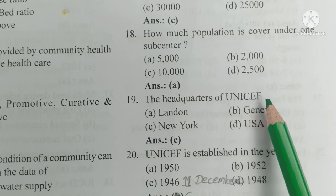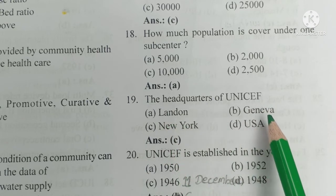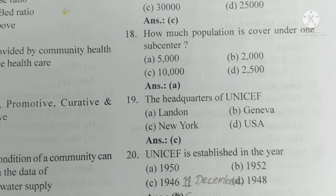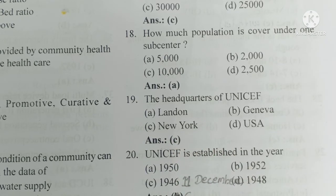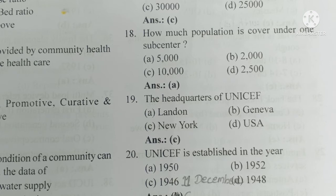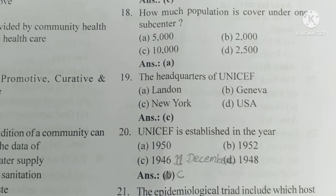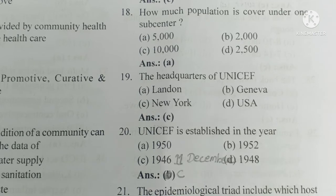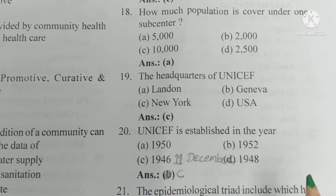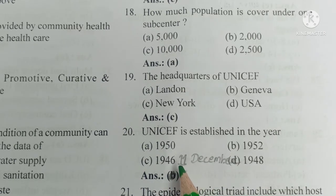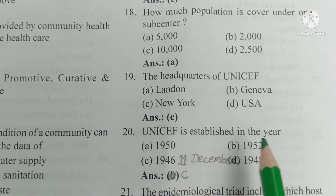Question number 19. The headquarters of UNICEF is: A) London, B) Geneva, C) New York, D) USA. The answer is C, New York. Question 20: UNICEF was established in the year: A) 1950, B) 1952, C) 1946, D) 1948. The answer is C — UNICEF was established on 11 December 1946.